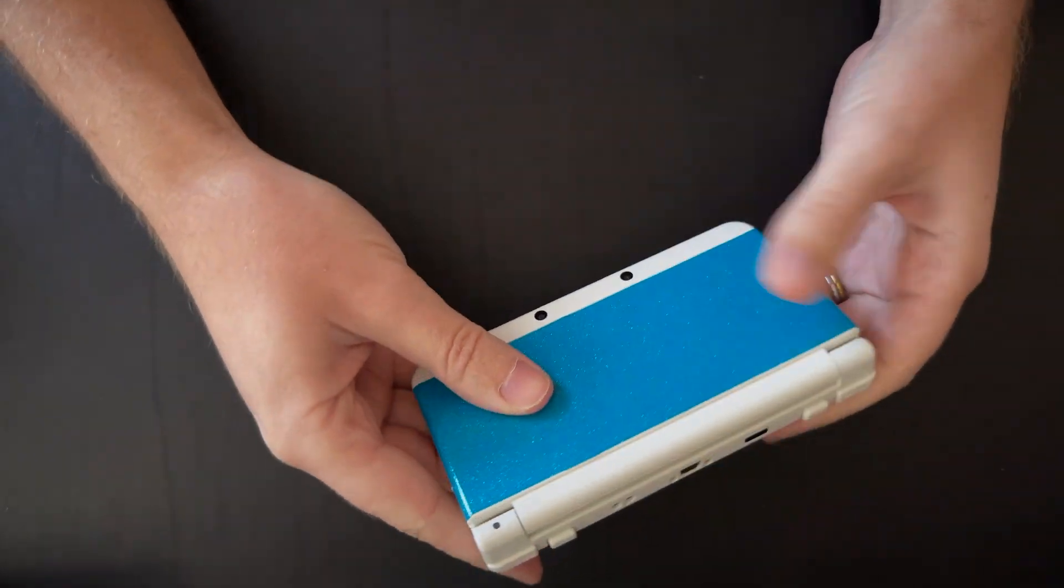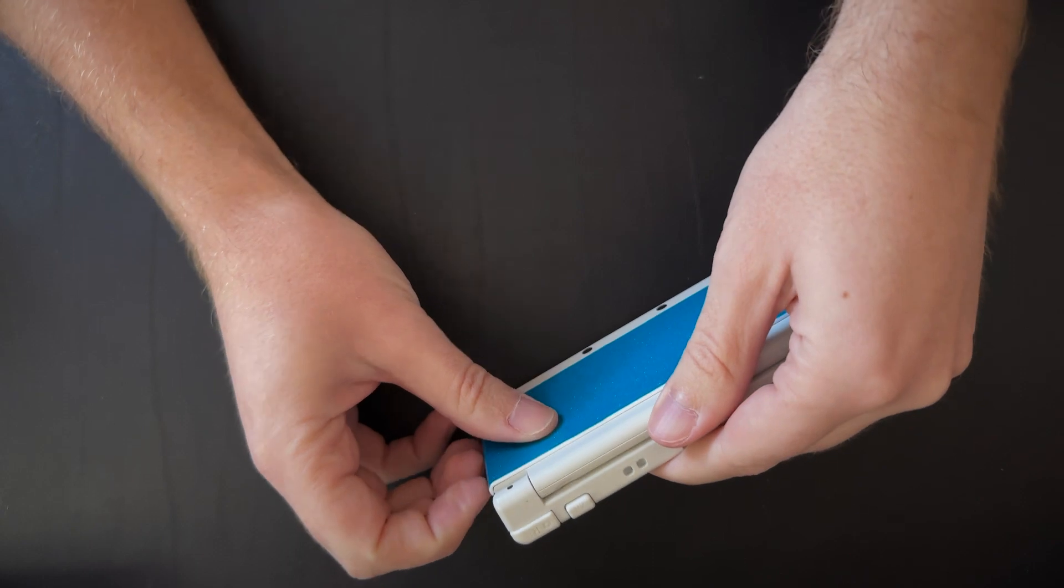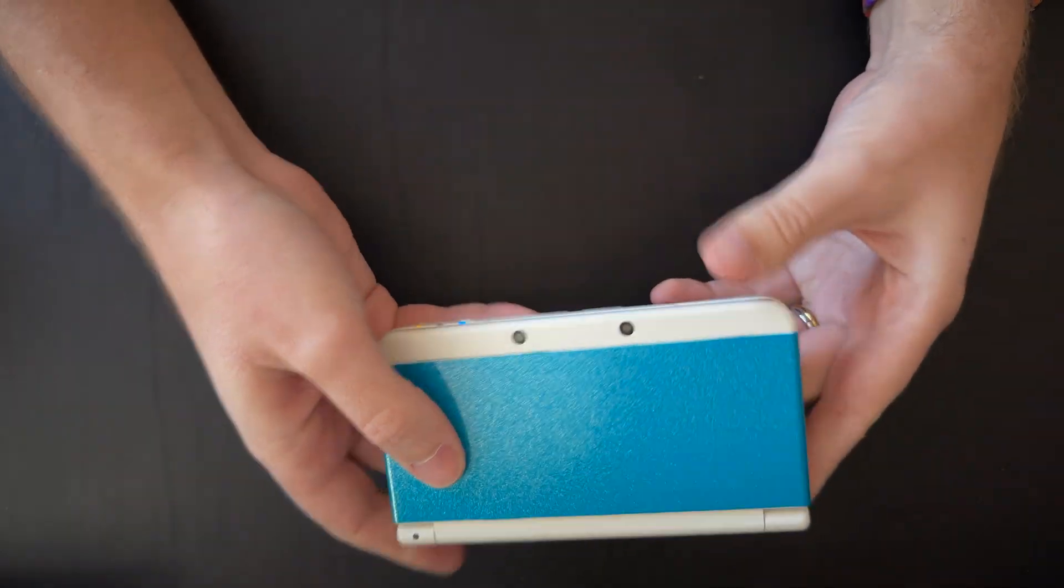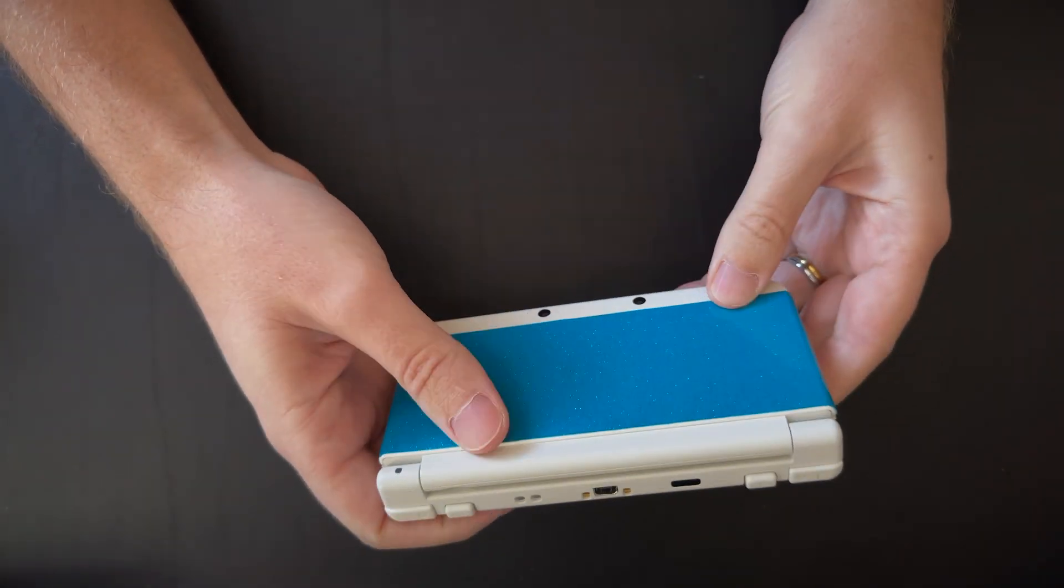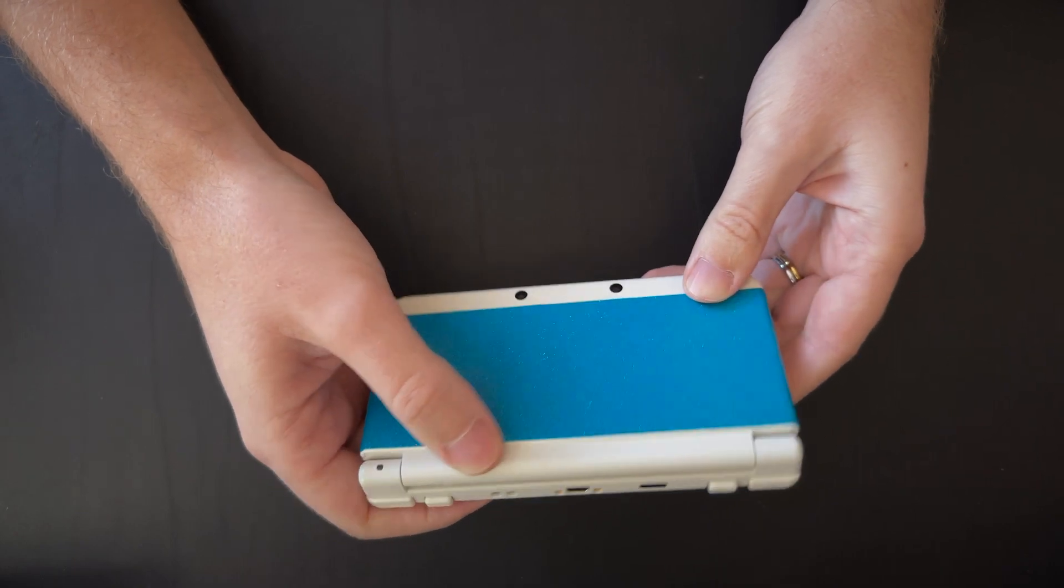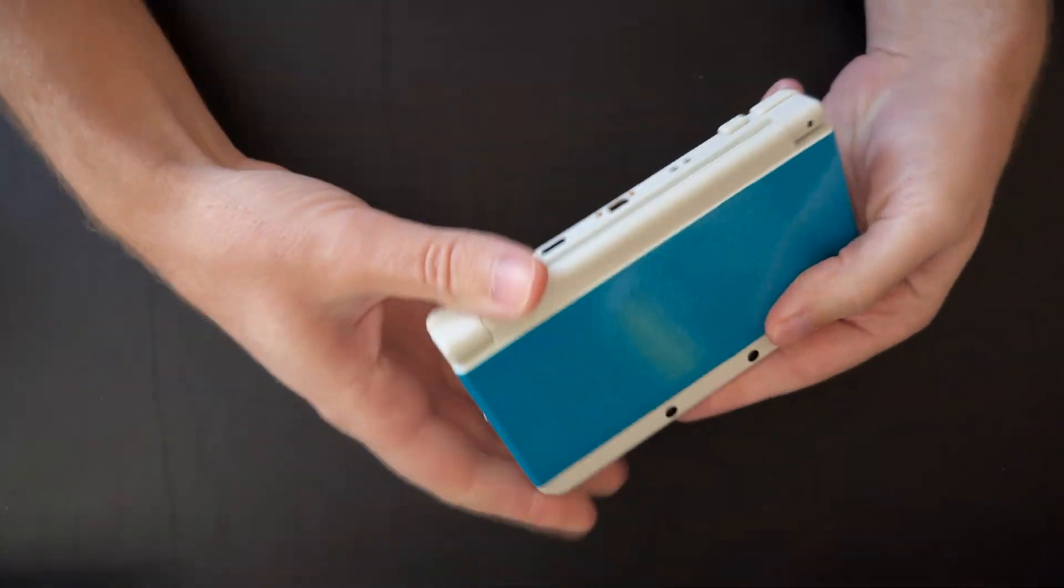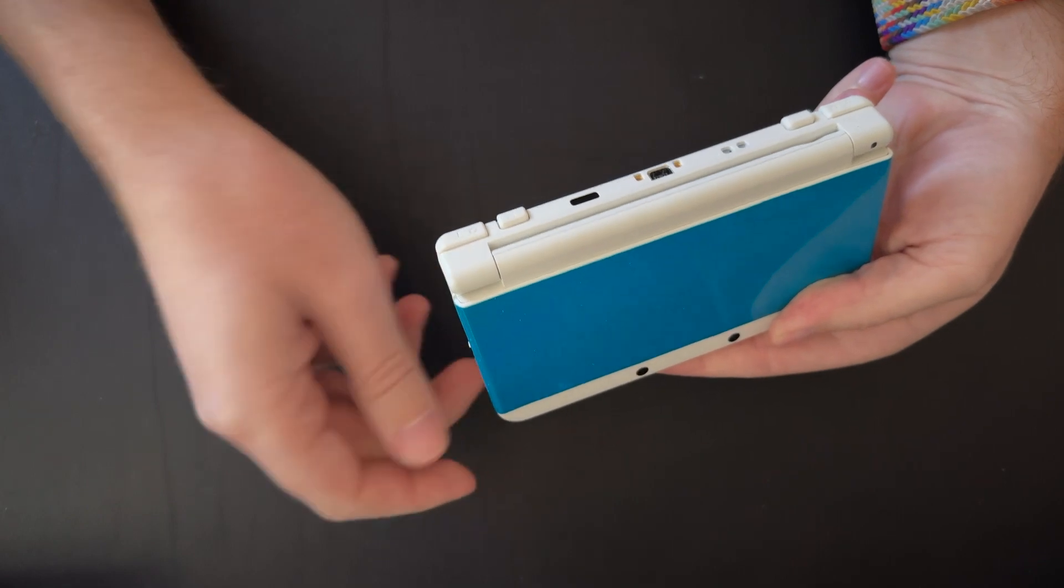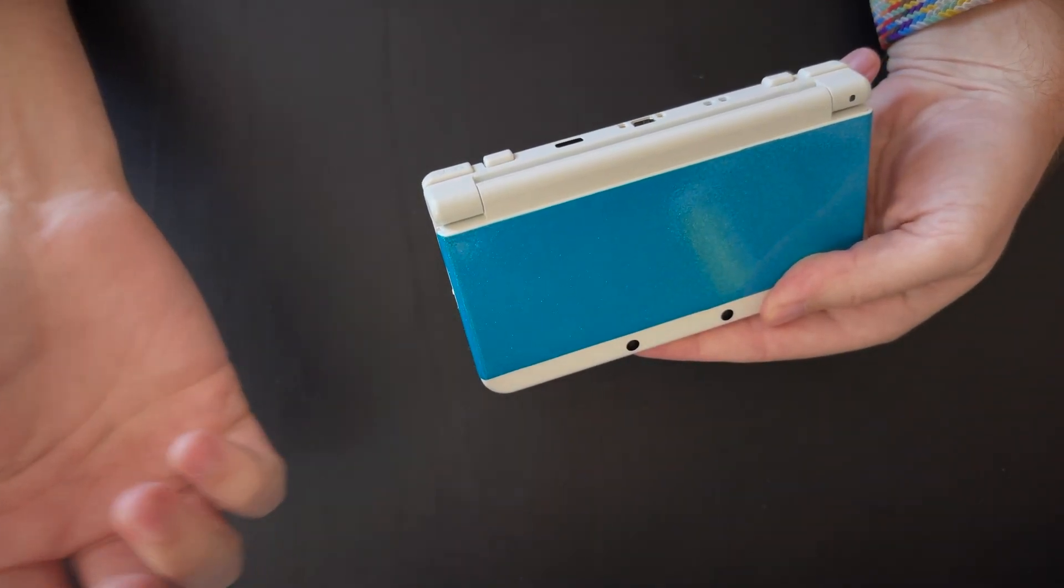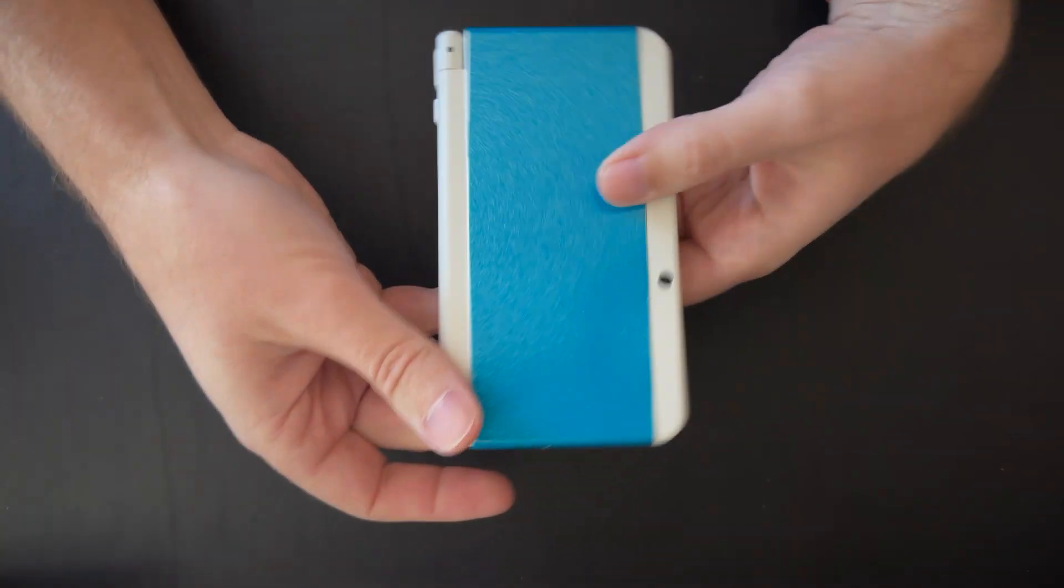I'm using just these generic faceplates, these white ones. It would probably work on anything. The only thing I'd recommend is probably just match the base color of your 3DS as close as you can, because you're still going to be able to see some of the edges here, and you just don't want it to be some weird color that stands out super big.